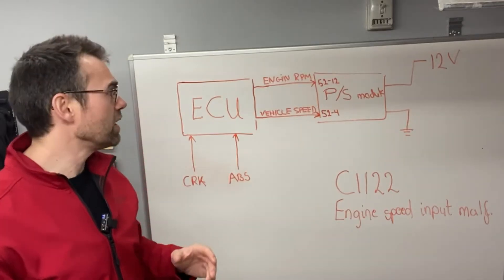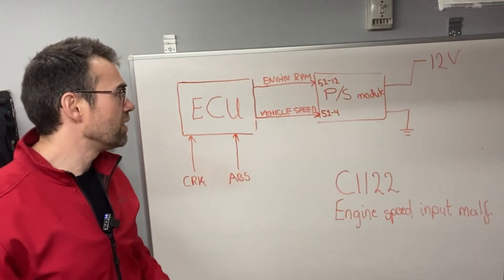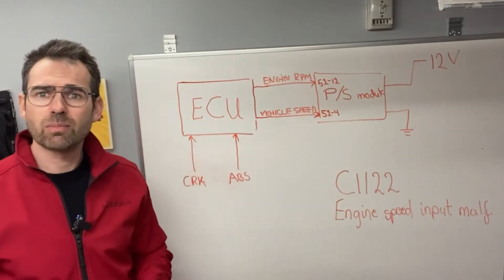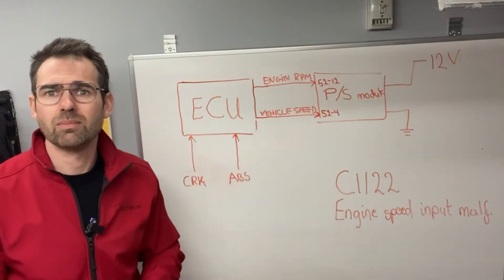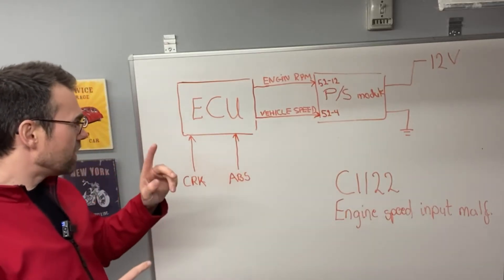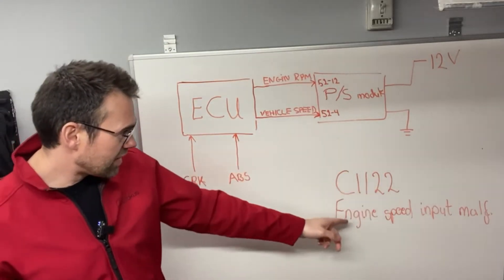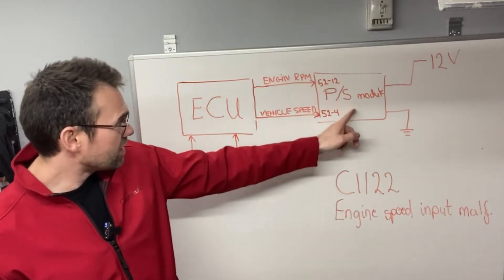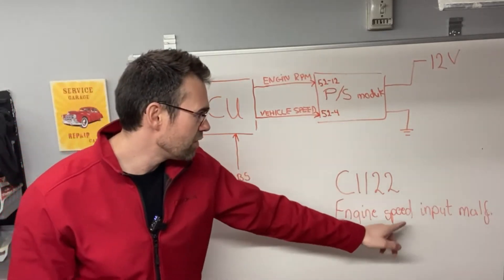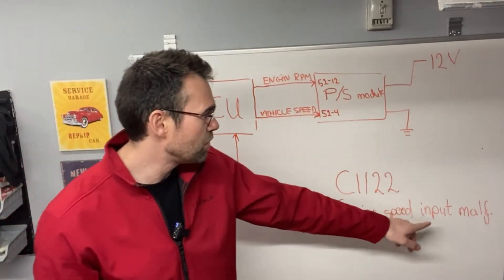It is basically just a regular signal this module receives, like from a hall sensor element. The error code C112022 states that this power steering control module does not receive an engine speed input, or there is an engine speed input malfunction.